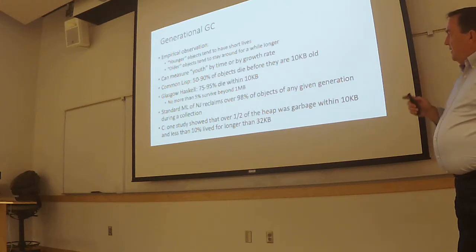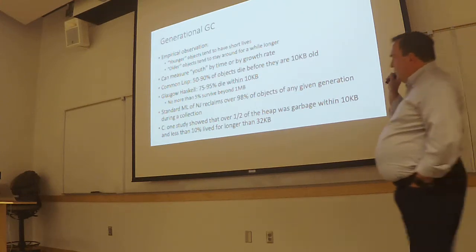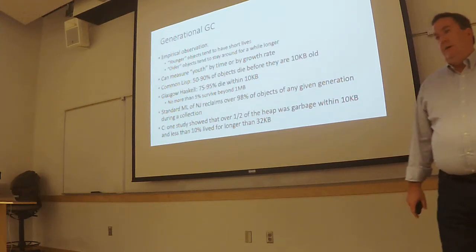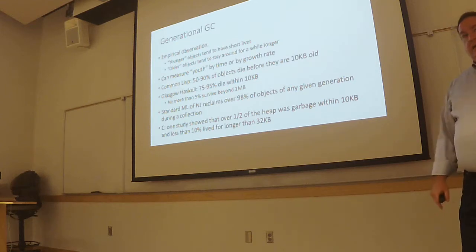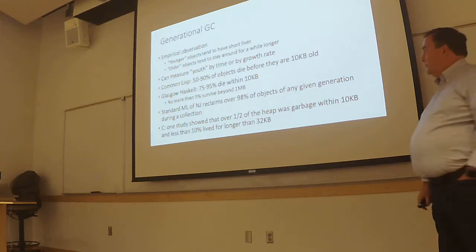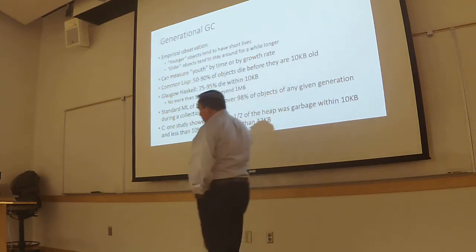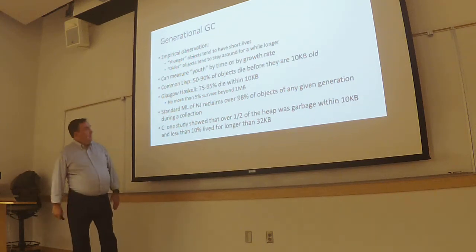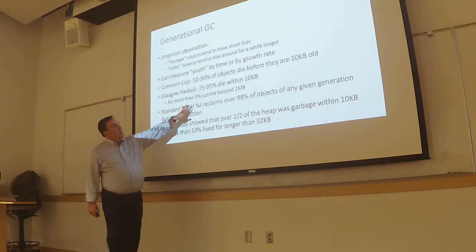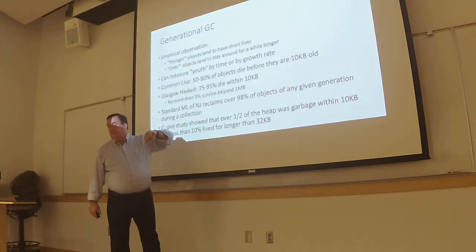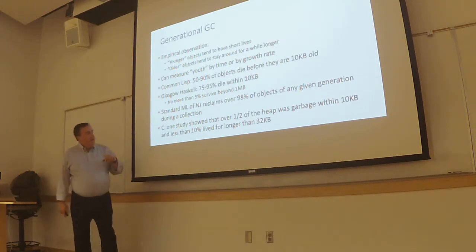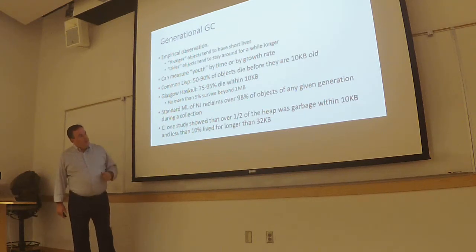Let's look at this observation. In Common Lisp, 50 to 90 percent of objects die before they are 10 kilobytes old — meaning before you've allocated another 10K, there's a 50 to 90 percent chance that object is no longer in use. In Glasgow Haskell — which is the next language we'll look at — 75 to 95 percent die within that range, with no more than 5 percent surviving beyond one megabyte. These all support this observation. In ML it's actually 98 percent.